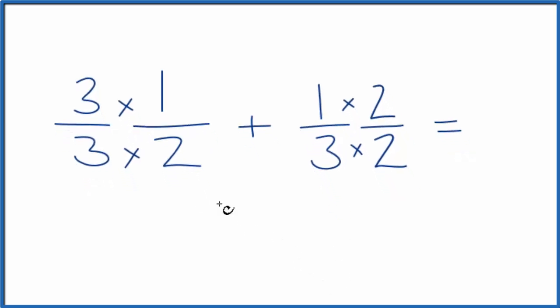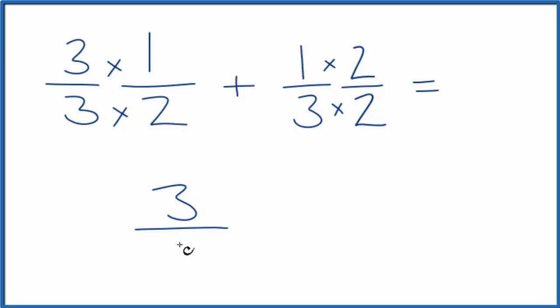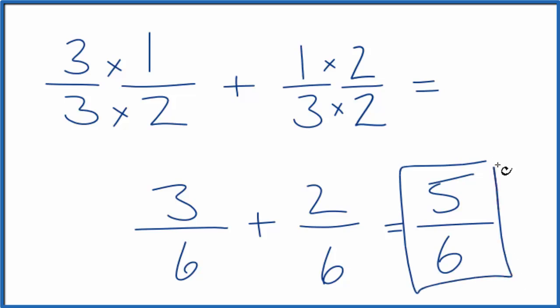But now, three times one, that's three. Three times two is six, plus one times two, that's two, over three times two is six. Now we have the same denominator. When we have the same denominator, we add the numerators. Three plus two gives us five. We bring the six over, five-sixths.